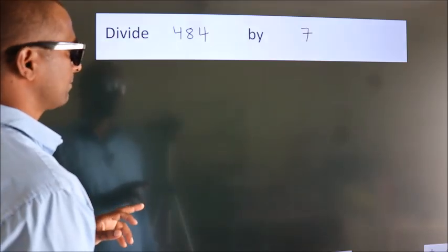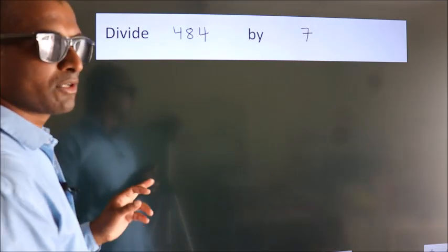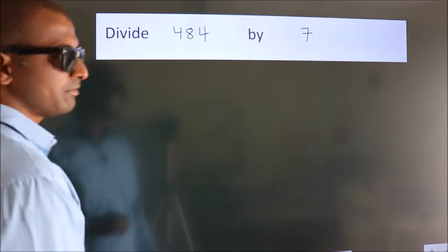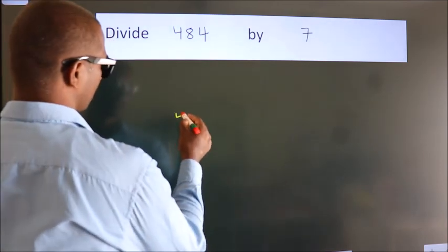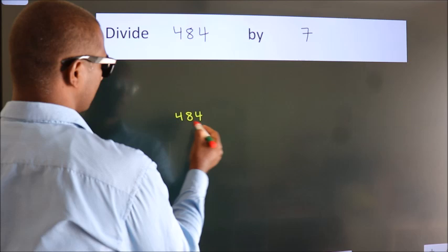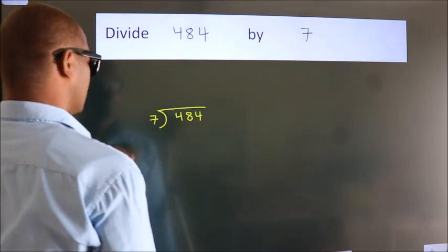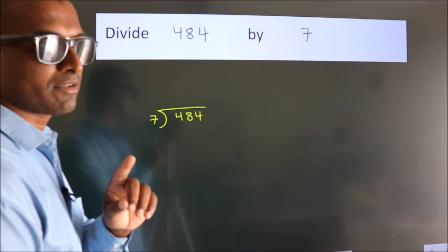Divide 484 by 7. To do this division, we should frame it in this way. 484 here, 7 here. This is your step 1.